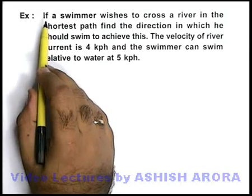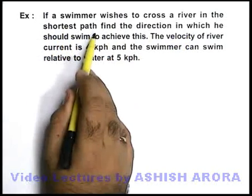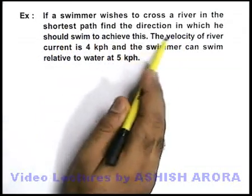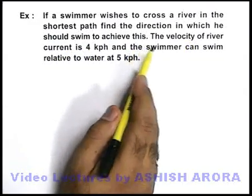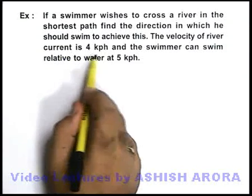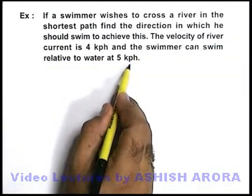In this problem, we are given that if a swimmer wishes to cross a river in the shortest path, we are required to find the direction in which he should swim to achieve this. We are also given that the velocity of river current is 4 kilometers per hour and the swimmer can swim relative to water at 5 kilometers per hour.